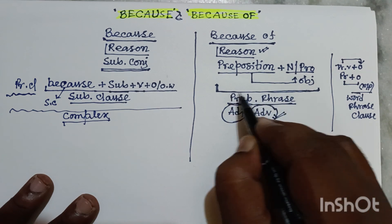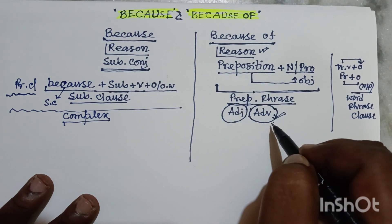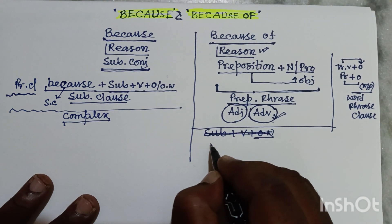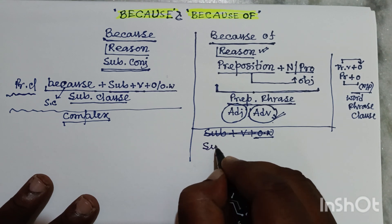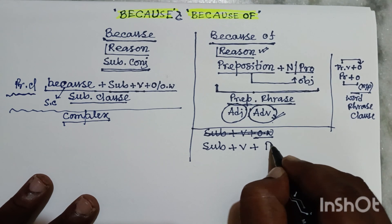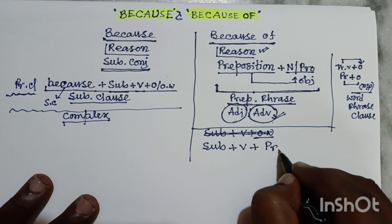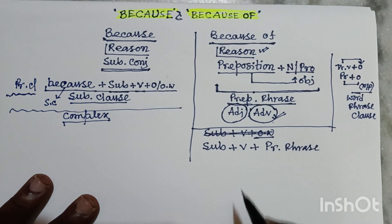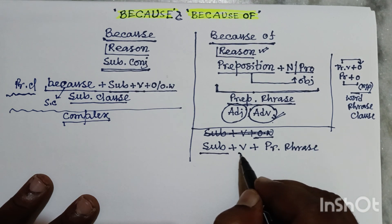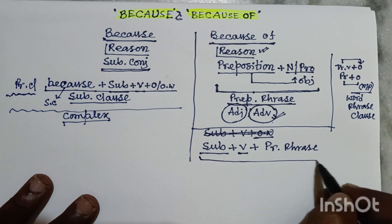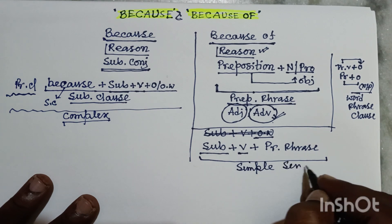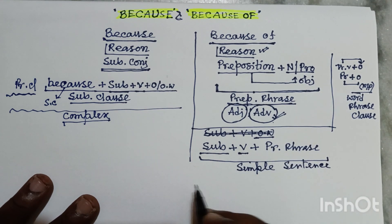That means this prepositional phrase will act as an adverb in the sentence. So in this structure we will get subject, then verb, then prepositional phrase. There will be one subject and one finite verb, so obviously it will be a simple sentence. My dear friends, I think you can understand the usage.